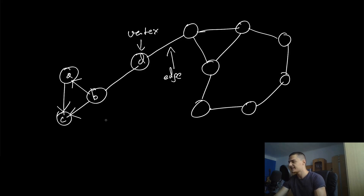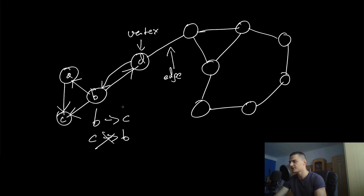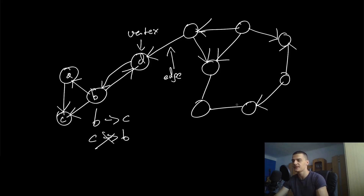In a directed graph, this means we can go from B to C but not from C to B. Of course we can have a connection in both directions — that's not a problem — but in a directed graph we always have a direction for each edge. In an undirected graph I can go from B to C and from C to B freely.